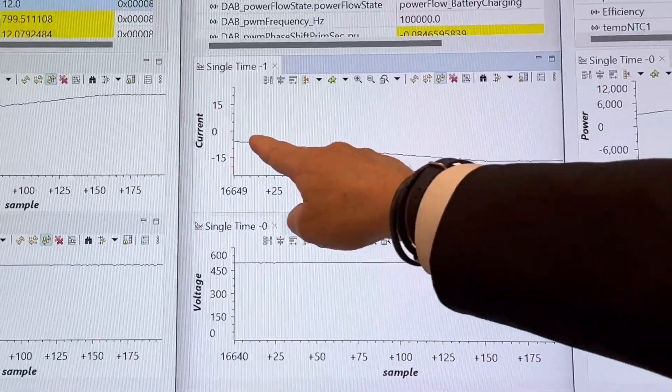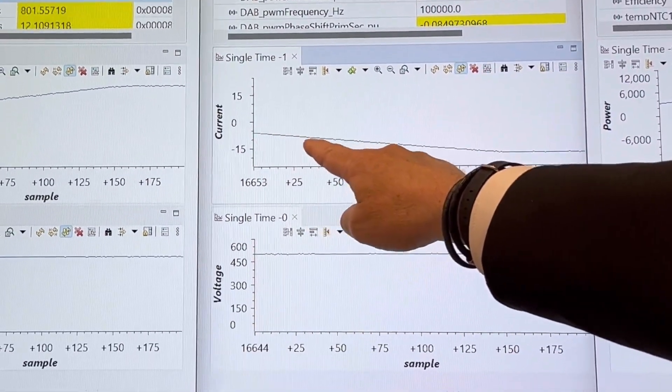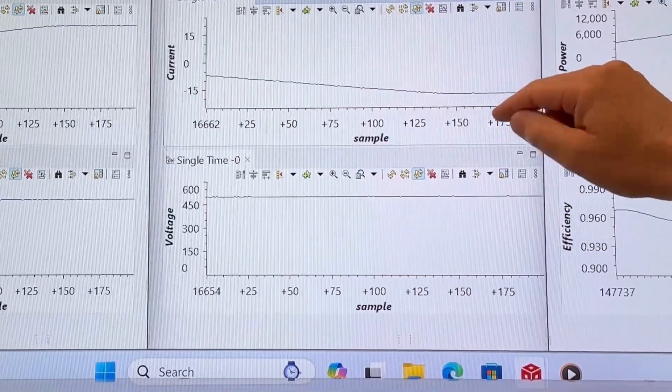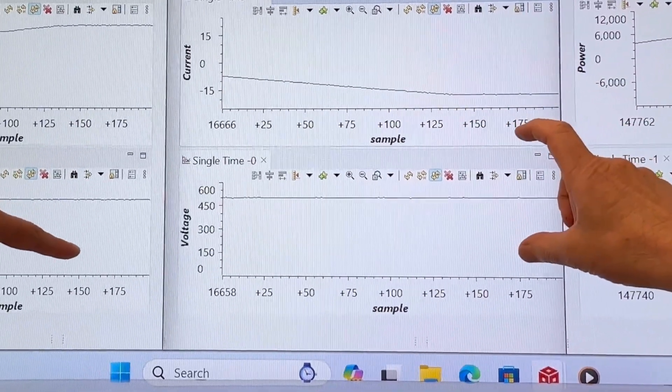We see on this chart the output side. It's 500 volt what we are regulating at the output. The current was going down from zero and now we are at minus 16 amp roughly, meaning at 500 volt 16 amp, this is the 10 kilowatt we see at the output.